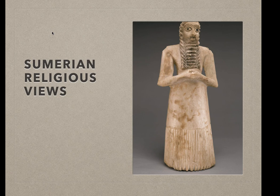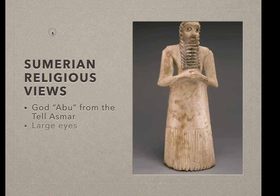From their statuary, like this head of the god Abu from Tel Asmar — located about 50 miles northeast of modern-day Baghdad — we can determine a few things about their religious views. See how the god's eyes are disproportionately large? This may symbolize the all-seeing vigilance of the gods. They are certainly able to see Gilgamesh's doings, as you'll see in this epic.